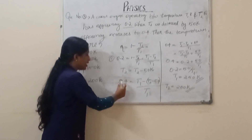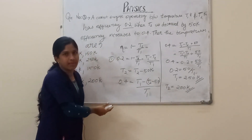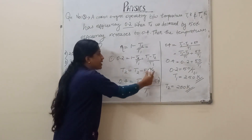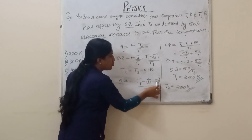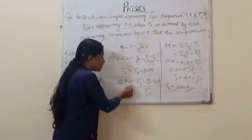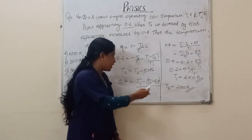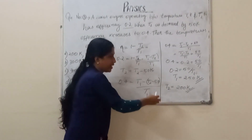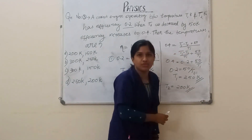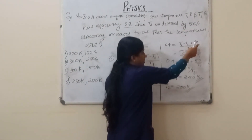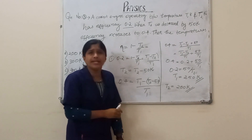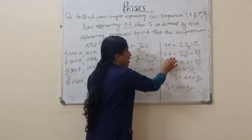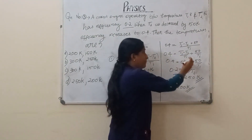In the second case, T2 becomes T2 − 50 Kelvin. So in the equation, 0.4 = (T1 − (T2 − 50)) / T1. Splitting this: 0.4 = (T1 − T2)/T1 + 50/T1. Since from the first case T1 − T2 by T1 equals 0.2, we substitute: 0.4 = 0.2 + 50/T1.